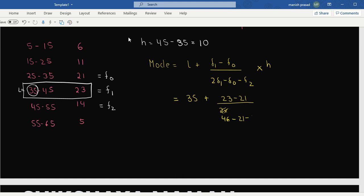Multiplied by h—what is the value of h? 10. Now what is 23 minus 21? 2. What is 46 minus 21 minus 14? 25. Check once more. If I'm not wrong, I think it should be 11.